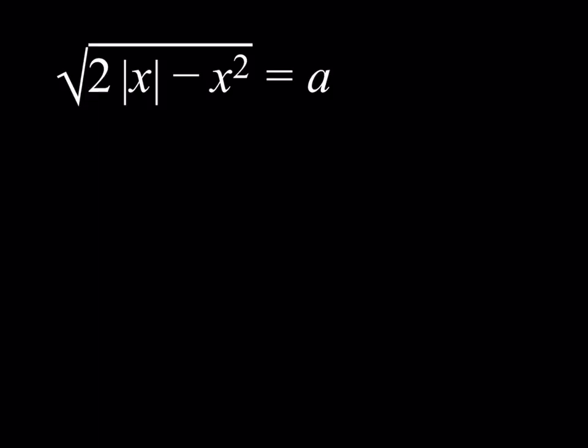The first thing I'm going to look at is that since we have a radical, the square root of something always needs to be greater than or equal to zero. So if a is less than zero, then we have no solution. I'm talking about real solutions here, so I'm not concerned with complex solutions.